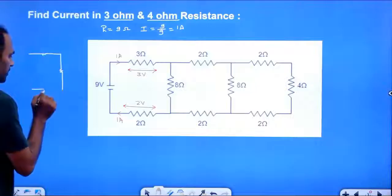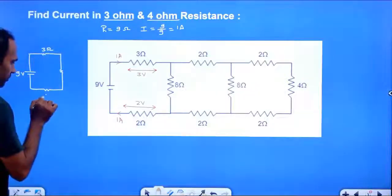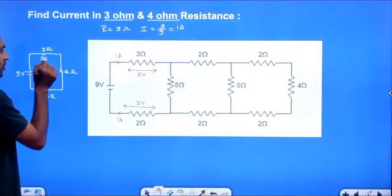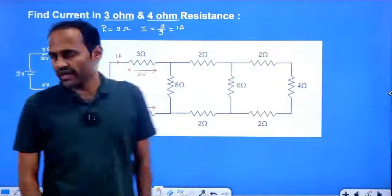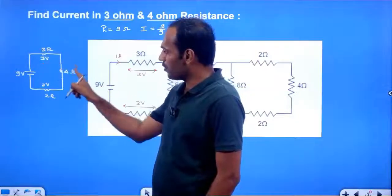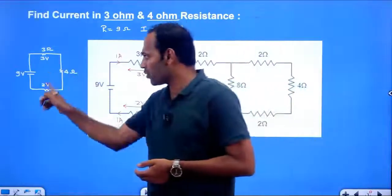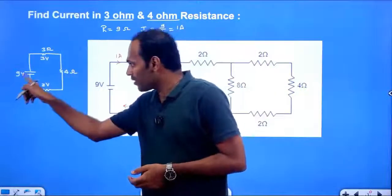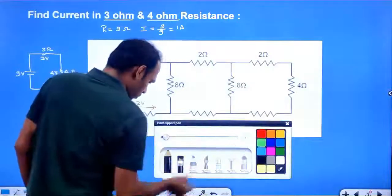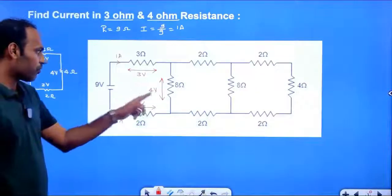We have 3 Ohm, 4 Ohm, and 2 Ohm resistors in the circuit with a 9V battery. We divide the 9V among the 3 series resistors. We already account for 3V and 2V (total 5V), so the voltage across the 4 Ohm parallel branch is 9 minus 5 equals 4V. Checking: 4 plus 3 plus 2 equals 9V. Correct.